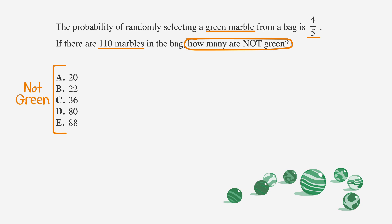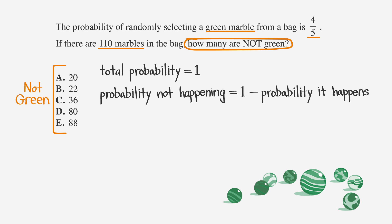We know from earlier in this lesson that the total probability for any situation that uses a fraction is going to be 1. Because of that, we can say that the probability of something not happening is just 1 minus the probability that it does happen.